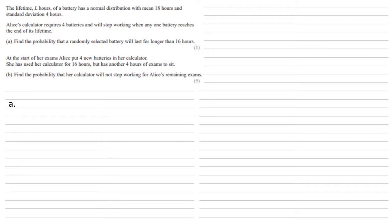This is being modeled as a normal distribution. We've been told that the mean is 18 and our standard deviation is 4, hence variance of 4 squared.